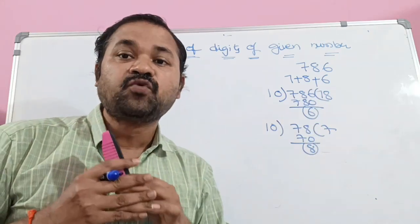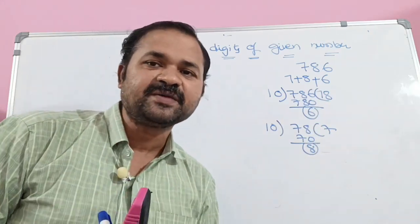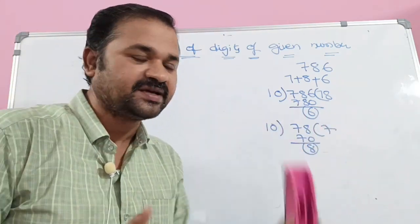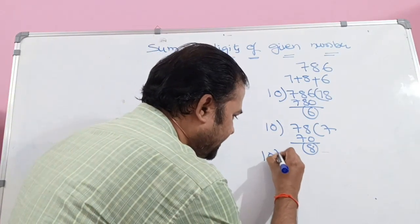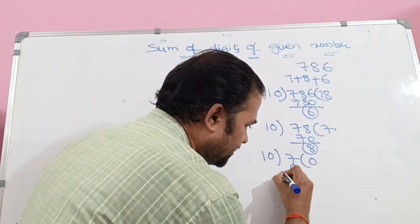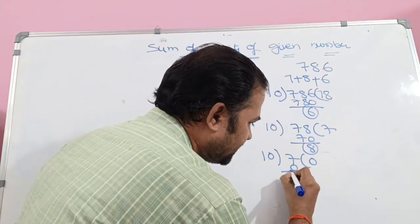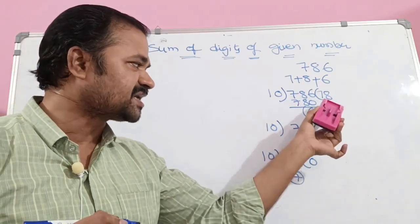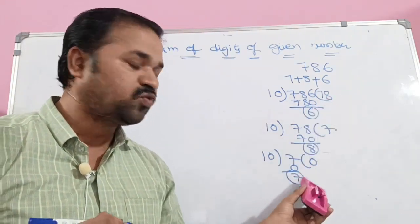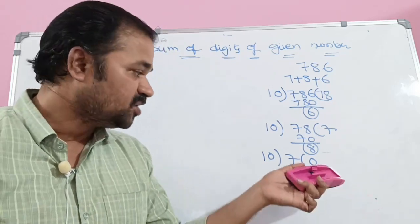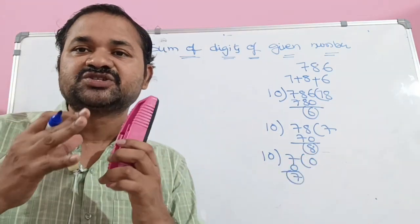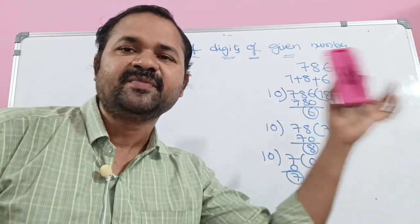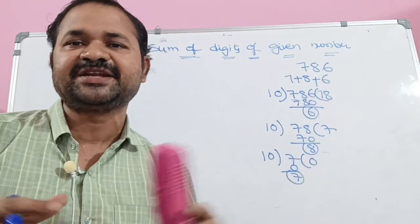After processing 8, we next perform the operation on 7. So 10 into 7 is 70, and 7 minus 0 means the remainder is 7. We add 7 to sum. Previously sum was 14, so 14 plus 7 gives 21. Now the quotient becomes 0, so when quotient reaches 0 we stop the procedure. This is the logic we will now implement as a program.